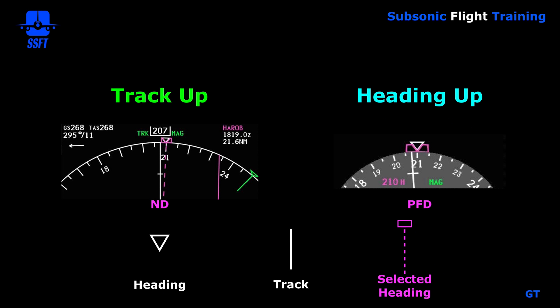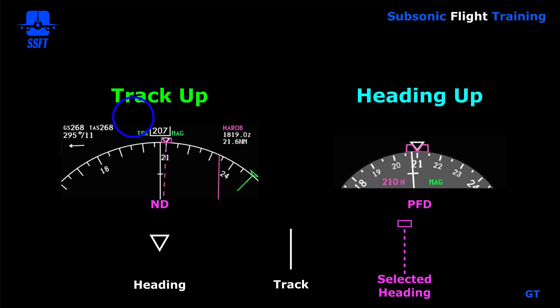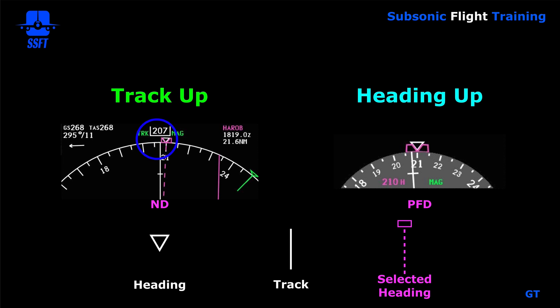On the PFD, which is a heading-up display, the upside-down triangle is at the top and the track line is offset if there's a crosswind. Heading is the preferred mode for the PFD. For the ND, it can be shown as either a heading-up or track-up display — again, airline preference. Most airlines choose a track-up display for the ND, so you'll see track displayed at the top and heading represented by the upside-down triangle.